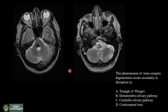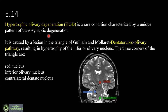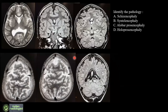The next question involves the phenomenon of trans-synaptic degeneration. Two sets of images show two interrelated abnormalities. 43 percent chose the dentato-rubro-olivary pathway and 38 percent chose the cerebello-olivary pathway. This is hypertrophic olivary degeneration occurring due to a cavernoma. The pathway involved is the dentato-rubro-olivary pathway, resulting in hypertrophy of the inferior olivary nucleus. The key structures are the red nucleus, inferior olivary nucleus, and the contralateral dentate nucleus.